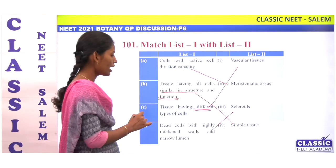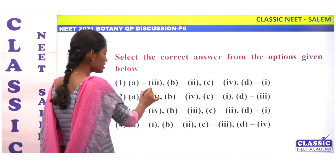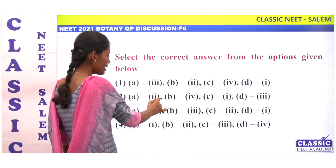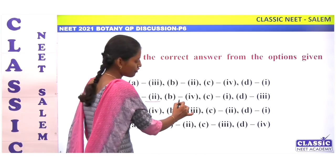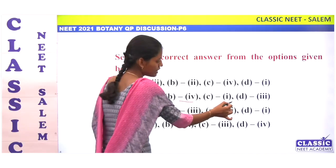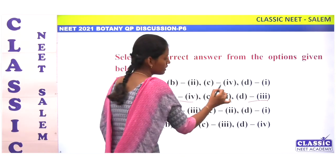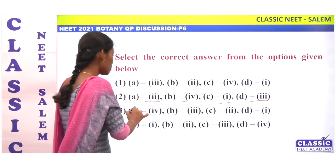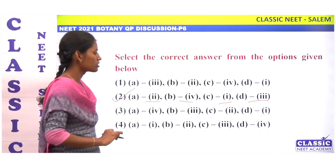To summarize the match: A is 2, B is 4, C is 1, and D is 3. So option 2 is correct for this question.